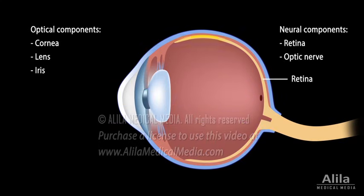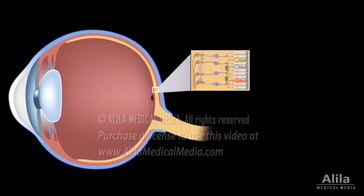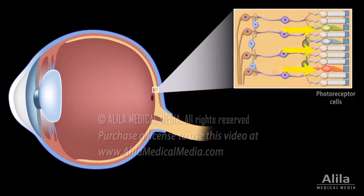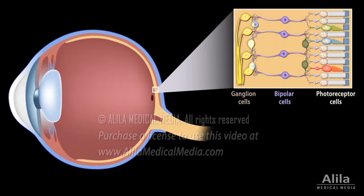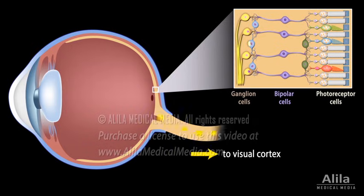are the retina, a light-sensitive tissue lining the inner surface of the eye, and the optic nerve. Light is absorbed by the photoreceptor cells in the retina. The optical information is then passed through several cell layers where it is converted into action potentials and sent via the optic nerve to the visual cortex of the brain.